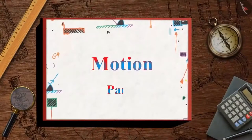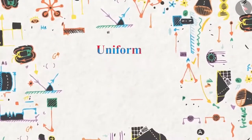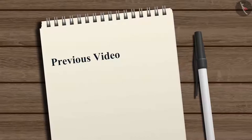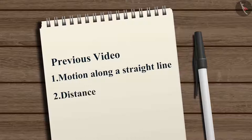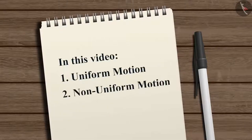Motion, part 2: uniform and non-uniform motion. In the previous video we learned about motion along a straight line and the concepts of distance and displacement. In this video we will learn about uniform and non-uniform motion and about speed.